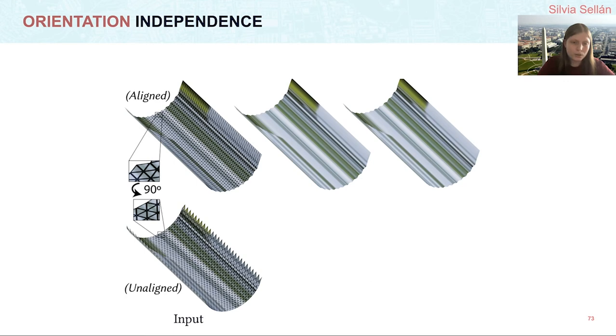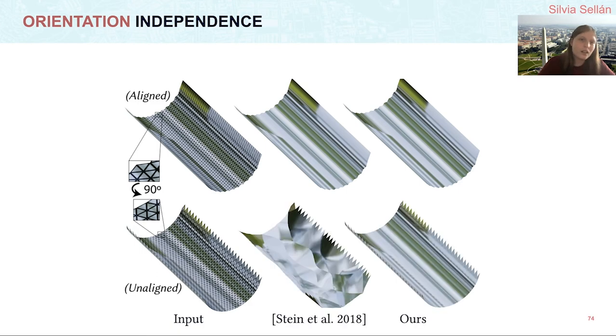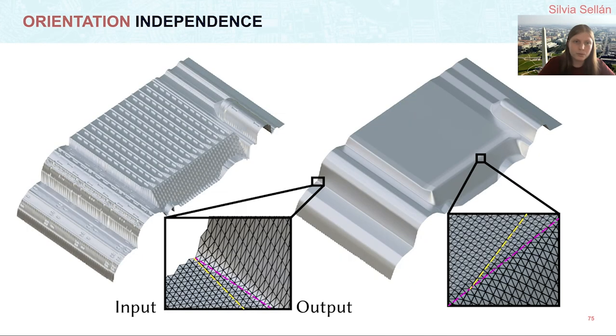However, if we rotate our grid by 90 degrees, having the same shape but just a slightly different discretization, the method of Stein and colleagues is unable to register the misaligned cylinder as a developable surface, so they produce this different output. Ours, however, outputs the same cylinder without problems.